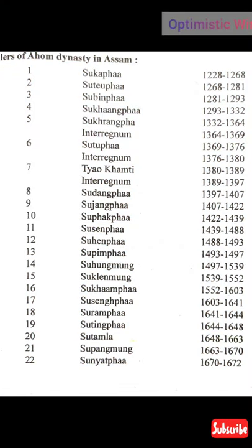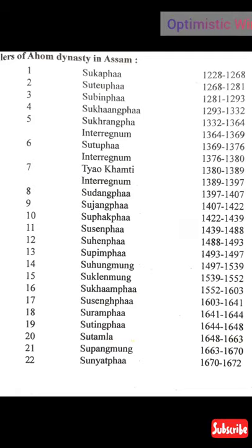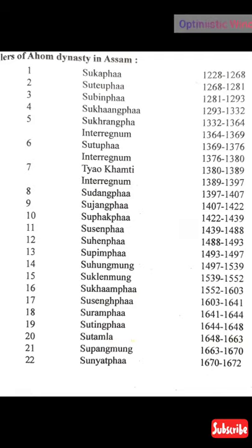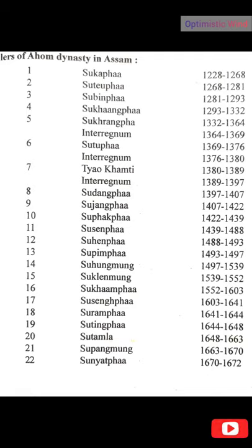We will first see the Ahom rulers of Assam in chronological order. The first Ahom ruler was Sukafa — 1228 to 1268. There is an important question: when did the Ahom come to Assam? The answer is 1228. The second ruler was Sukafa, from 1268 to 1281. In 2020 there was a question: who was the last Ahom ruler? The answer is Purandar Singha.